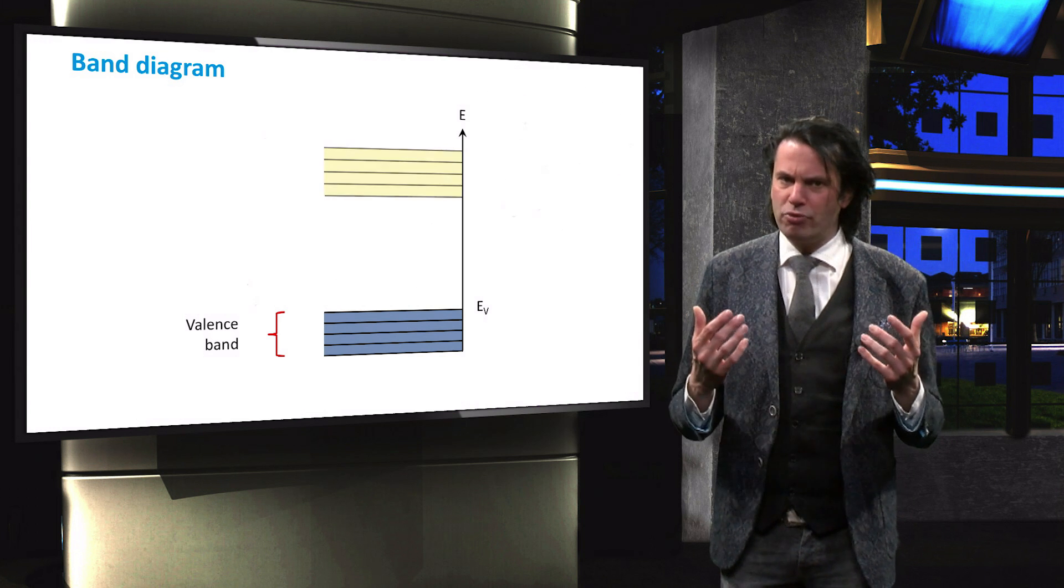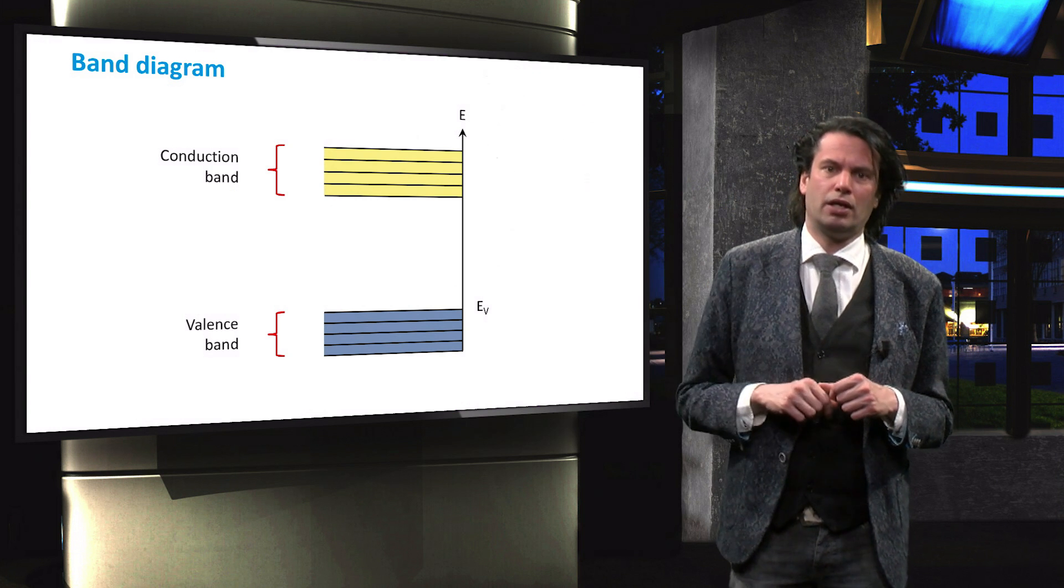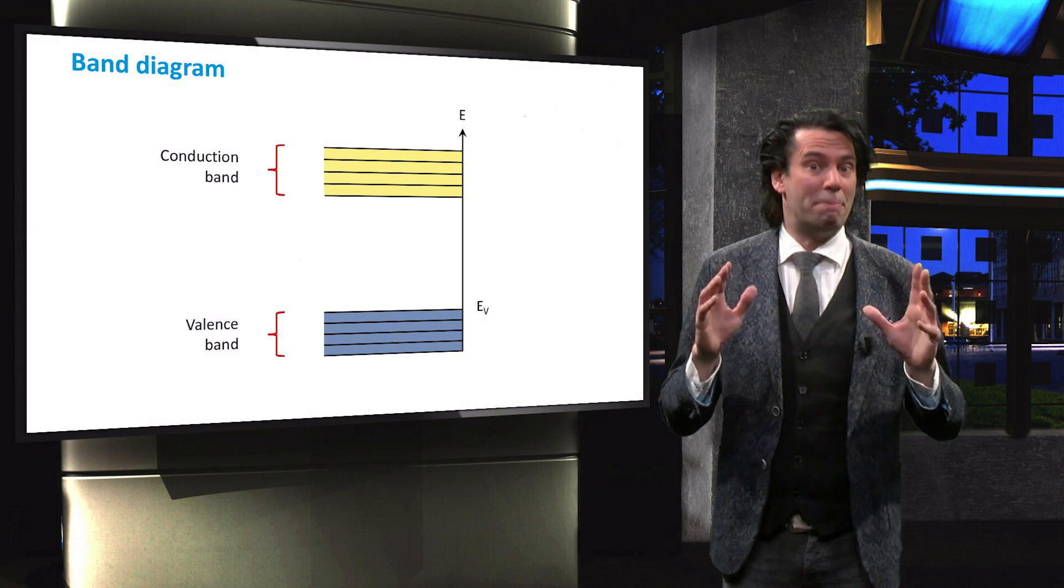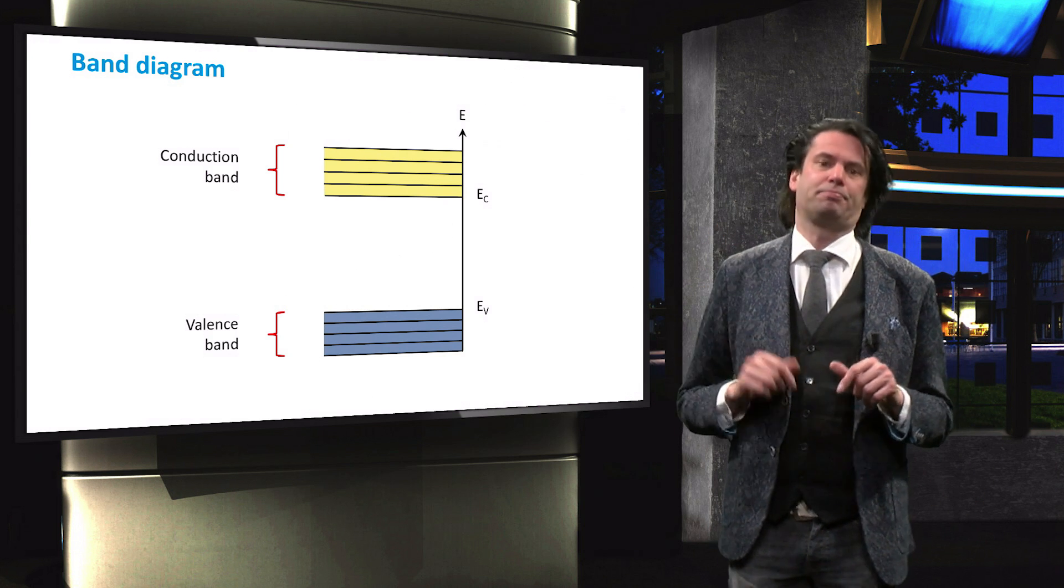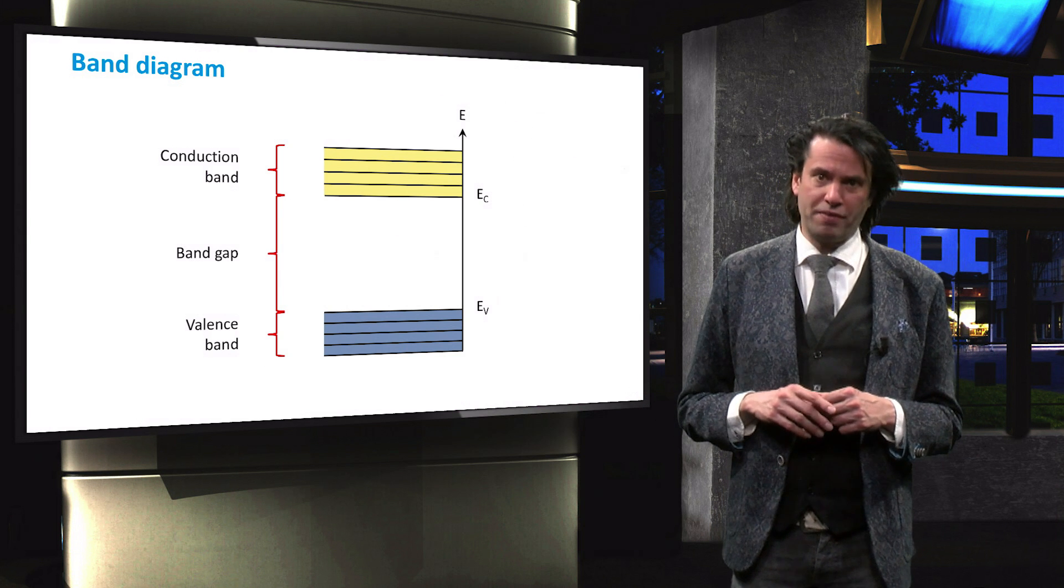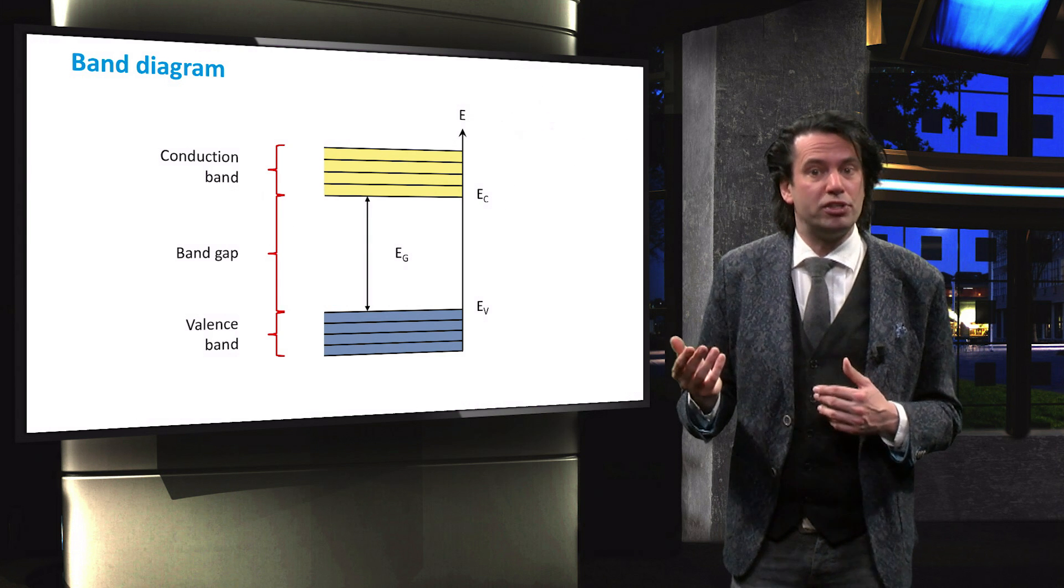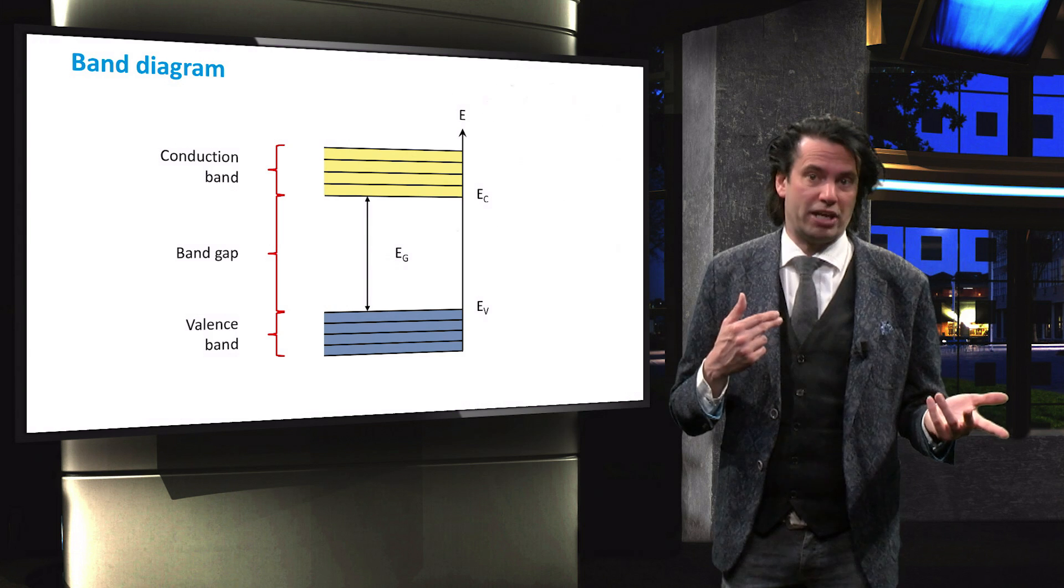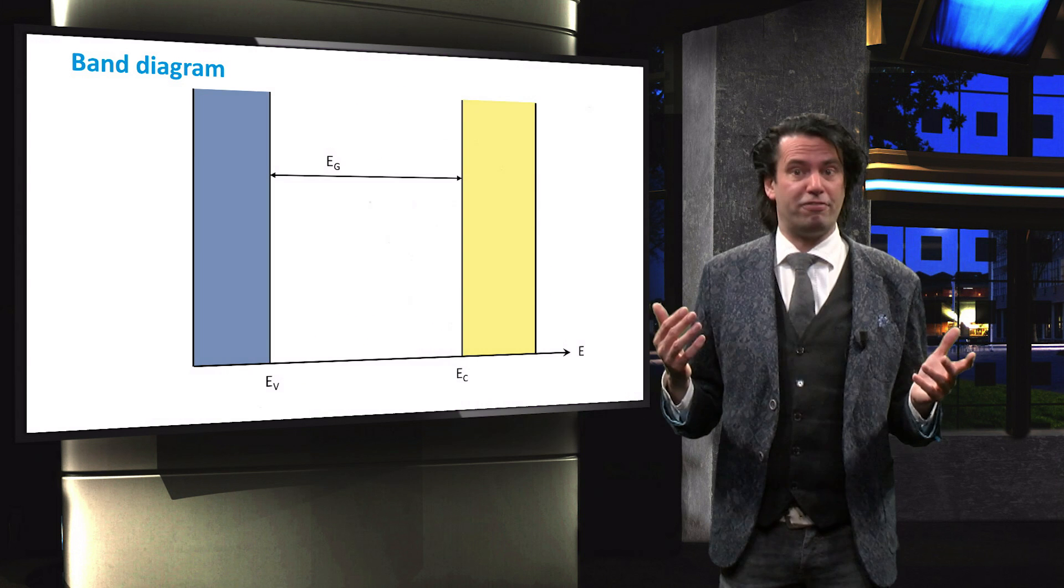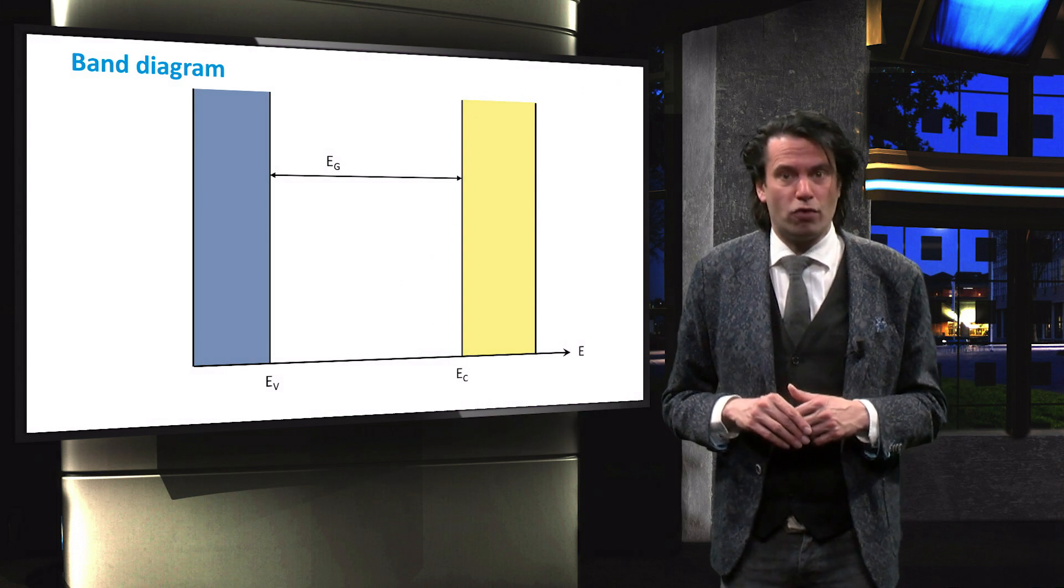The energy levels of the unbound electrons are represented by the conduction band. The lower energy limit of the conduction band is known as the conduction band edge, as indicated by EC. The energy levels between the valence and conduction band are in the band gap, with the band gap energy defined as the difference between the conduction band edge and the valence band edge. For convenience sake we will rotate the band diagram figure to look at the density of states function of crystalline and amorphous silicon.